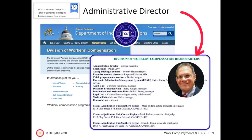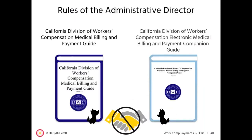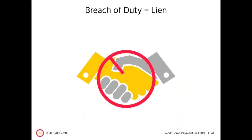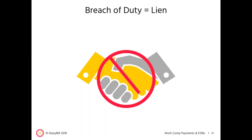As a reminder from webinar one, George Parasoto is the administrative director of the DWC. The administrative director promulgates the rules that providers and claims administrators must follow. Today we will review the DWC guides. If a claims administrator fails to follow the rules in these guides, a provider can file a lien and assert breach of duty. Providers, not receiving an EOR, receiving incomplete EORs, or being unable to proceed with an SBR or IBR without an EOR is not allowed — you can very easily file a lien asserting breach of duty.